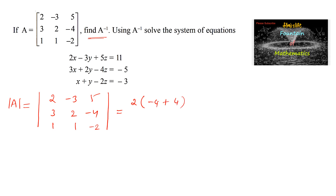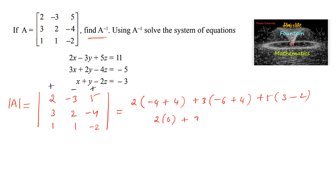Using the sign pattern plus, minus, plus along the first row: minus 3 times (3 × -2 minus 1 × -4) plus 5 times (3 × 1 minus 2 × 1). This simplifies to 2(0) + 3(-2) + 5(1), giving 0 minus 6 plus 5, which equals negative 1. Since this is not equal to 0, A inverse exists.